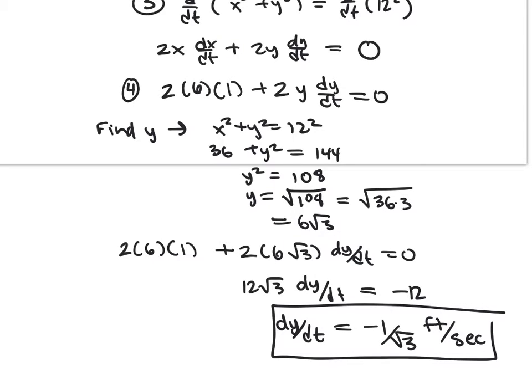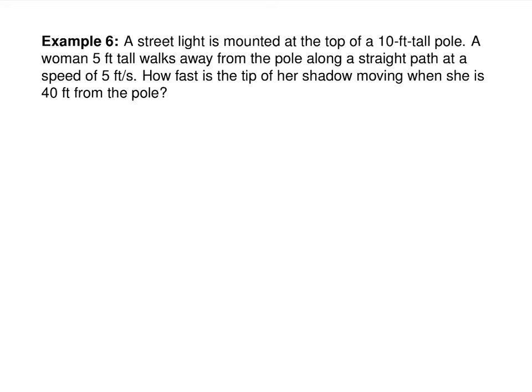If you had realized you needed Y for your eventual answer, you could have found Y in the beginning. But if you're new to it, you might run into the end and realize you also needed Y. Now that you've seen it, you can find Y right away.